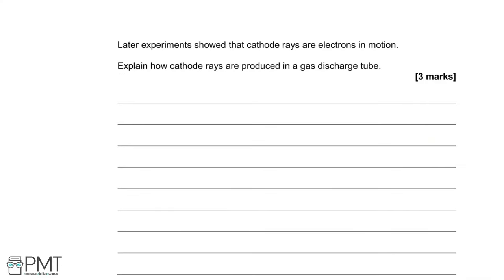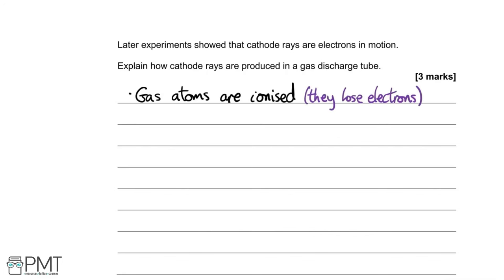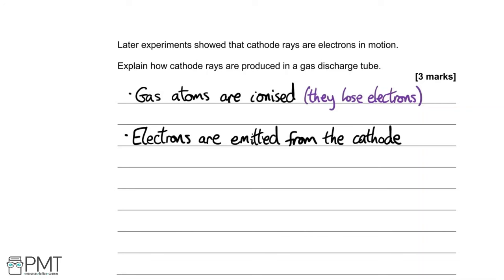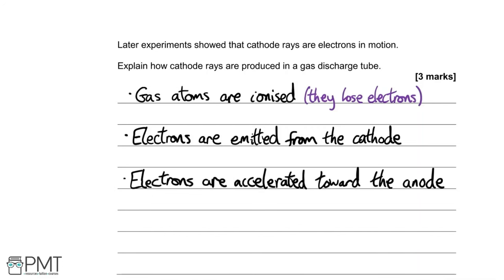Later experiments showed that cathode rays are electrons in motion. To explain how cathode rays are produced in a gas discharge tube: first, the gas atoms are ionised, i.e. they lose electrons. Next, electrons are emitted from the cathode. Finally, the potential difference causes the electrons to be accelerated toward the anode. Three points, so three marks.